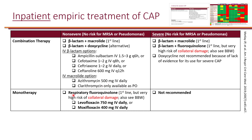Alternatively, we can also have monotherapy with a respiratory fluoroquinolone — either levofloxacin or moxifloxacin — and this is also considered first line. But again, keep in mind this is associated with collateral damage and adverse effects. Beta-lactam plus macrolide is first line, while beta-lactam plus doxycycline is considered alternative because there is less evidence with doxycycline.